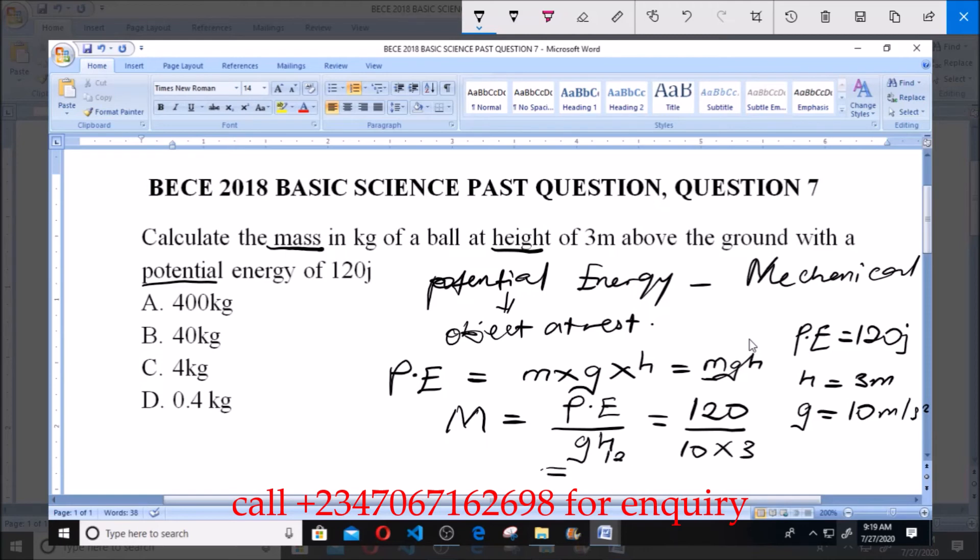And this will give us 120 all over 30. Now, 120 divided by 30, this zero will cancel the zero, and 3 in 12 will give us 4. So, we have 4 kg.